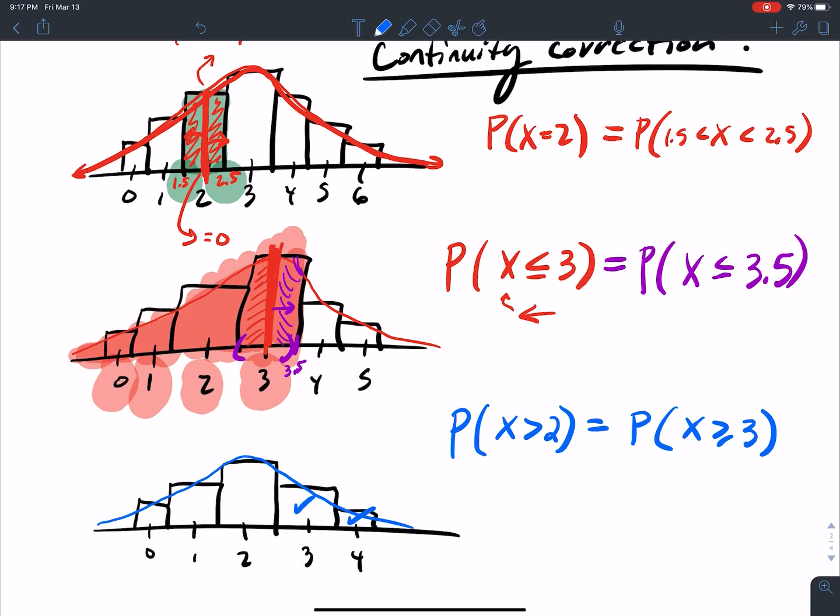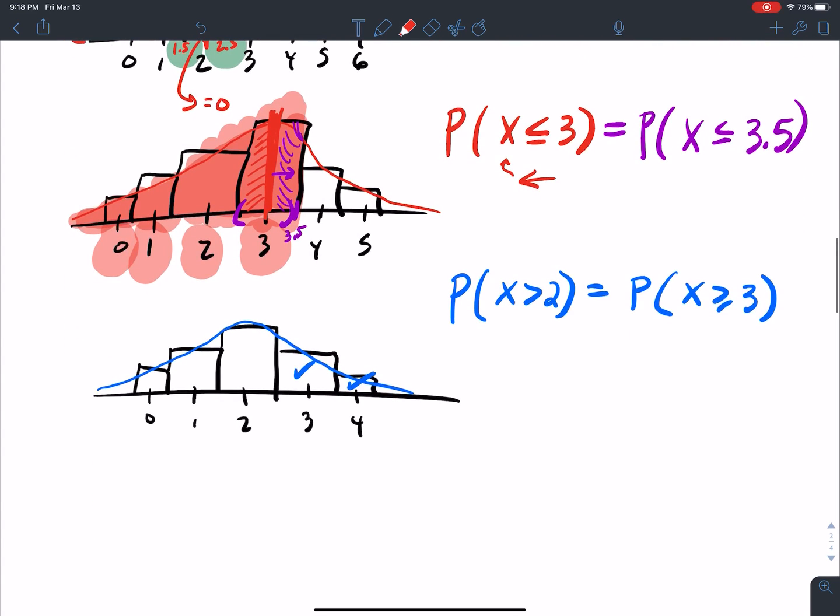So this actually becomes probability that x is greater than or equal to 3. Because we're dealing with discrete, the little bar underneath here that tells us that it's equal to, that's actually important now when you're dealing with a discrete versus a continuous. We need to convert it so where we have the equal sign underneath the inequality before we do the continuity correction. So x greater than 2, that's going to be 3 and 4.